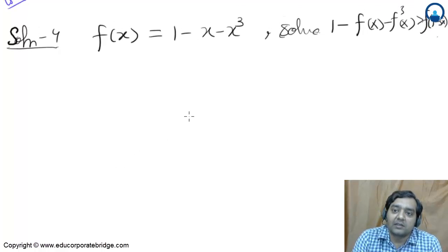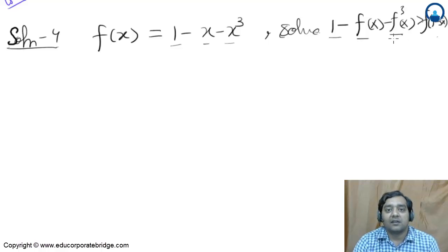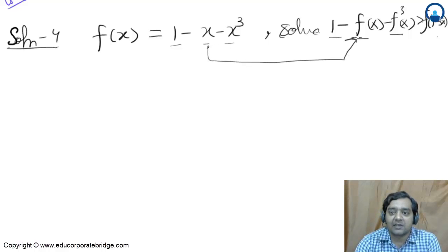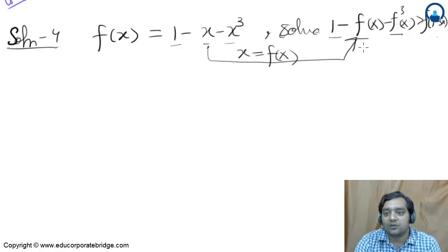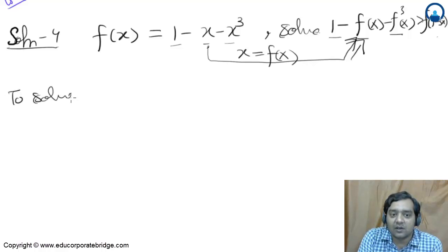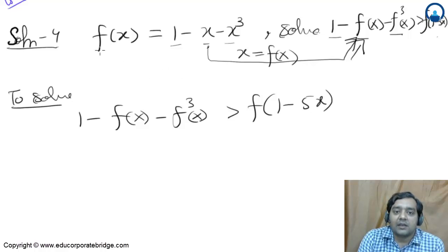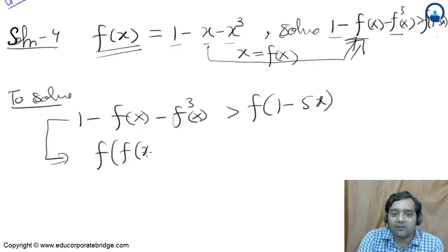When reading the question, notice that on one side we have 1, x, x³, and on the other side we have 1, f(x), f³(x). So if we substitute f(x) in place of x in f(x), that expression appears. This means the left-hand side 1 - f(x) - f³(x) is nothing but f(f(x)), and the inequality becomes f(f(x)) > f(1 - 5x).